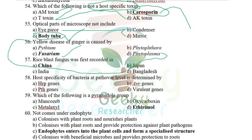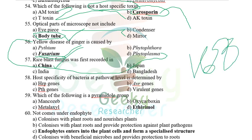Yellow disease of ginger is caused by Fusarium. Most yellows are caused by phytoplasma, but ginger yellow is caused by Fusarium. Rice blast was first reported in China in 1637. In India, rice blast was first reported in Thanjavur district of Tamil Nadu in 1918. Rice blast is caused by Pyricularia oryzae (anamorph: Magnaporthe oryzae).